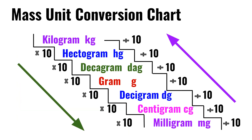Mass unit conversion chart. First, we have the kilogram, which is kg. Times 10 is the hectogram, which is hg. Hectogram times 10 is the decagram, which is dag. Decagram times 10 is the gram, which is g.